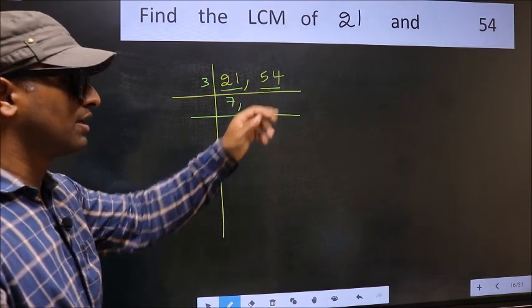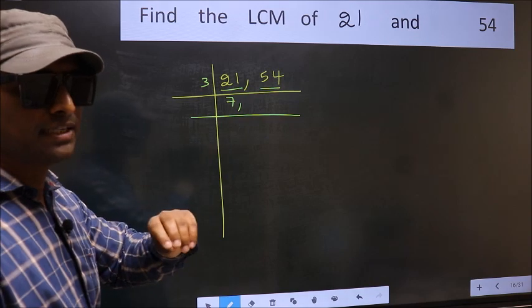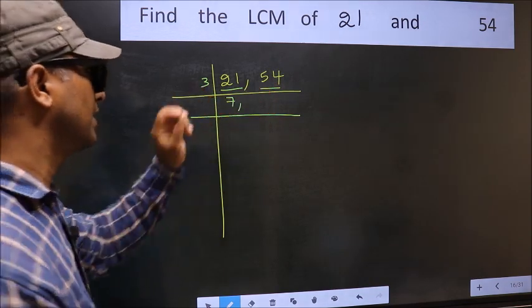We get 9 and 9 is divisible by 3. So this number also divisible by 3.